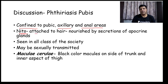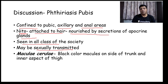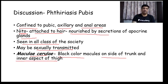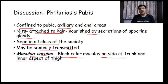Phthiriasis pubis is seen in all classes of society and may be sexually transmitted. Maculae ceruleae are the characteristic lesion — black-dot macules on the side of the trunk and inner aspect of thighs. This is an important exam question: maculae ceruleae are black-colored macules on the side of the trunk and inner aspect of thigh due to pediculosis pubis or phthiriasis pubis.